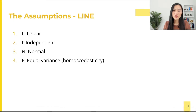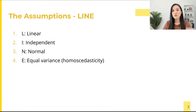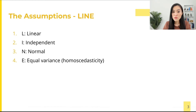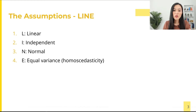You can easily remember this with the acronym LINE. L stands for linear relationship, I means the residuals are independent, N means the residuals are normally distributed, and E means equal variance of residuals. It's important to check these assumptions when performing linear regression, as violations can have a substantial impact on the parameter estimates including the confidence intervals and levels of statistical significance.